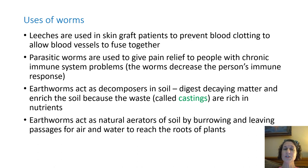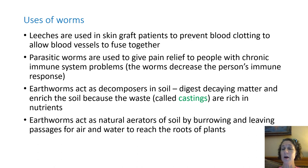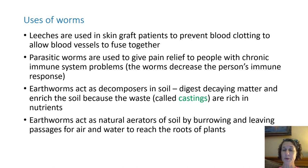Parasitic worms can be used to give pain relief to people with chronic immune system problems. Basically, if you have an immune system problem, sometimes your immune system is more harmful than helpful. In this case, the worms can decrease that immune response, which gives some comfort and relief to people dealing with a problematic immune system.